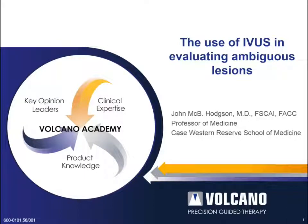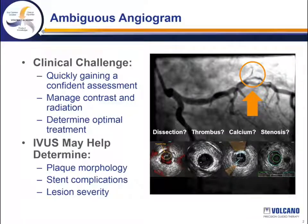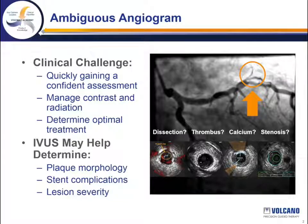Hello, this is John Hodgson, and I'm going to be talking in the next few minutes with you about the use of IVUS for evaluating ambiguous lesions. Ambiguous angiograms pose a clinical challenge in that we need to quickly gain a confident assessment of what is going on while minimizing contrast and radiation and determining the optimal treatment.